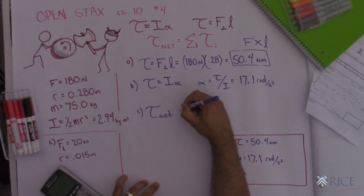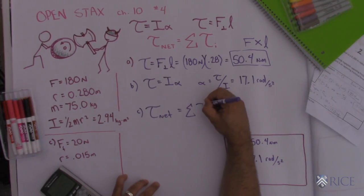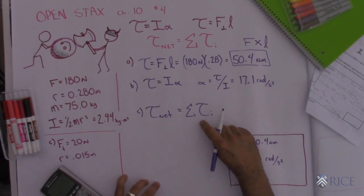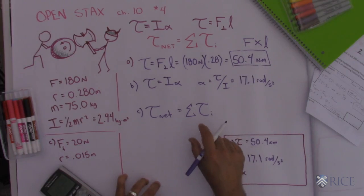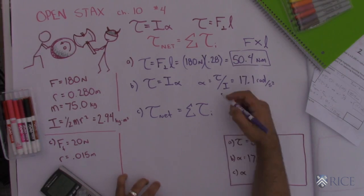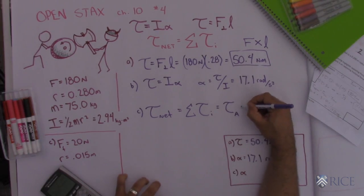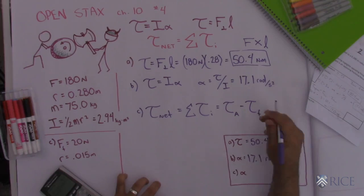My net torque is simply the sum of all the individual torques. So I know the torque that's applied to speed it up, but I also need to find the torque that's applied that's slowing it down. There's a frictional torque. So I'm going to take the torque that's applied minus the frictional torque.